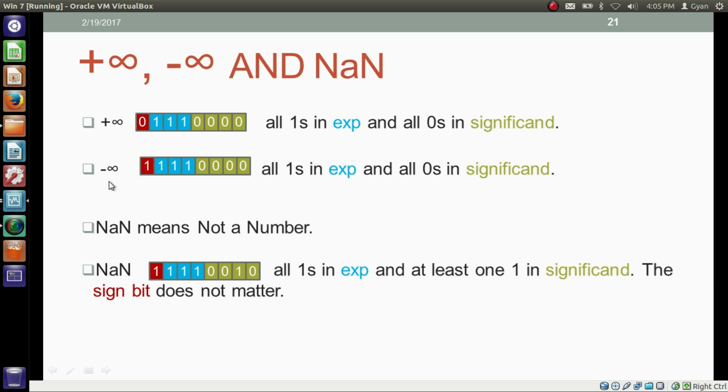There is one other thing we can represent as floating point fractional number, that is NaN, means not a number. NaN is represented as all 1s in the exponent bit and at least one 1 in the significant bit. If all the bits in the significant are 0, then either it will represent positive infinity or negative infinity. But if at least one bit is 1, then after writing all 1s in the exponent bit, it will represent significant or NaN, not a number.